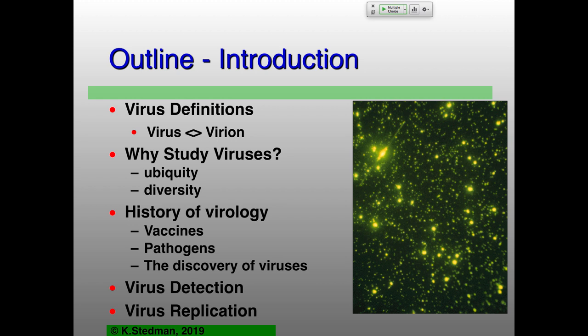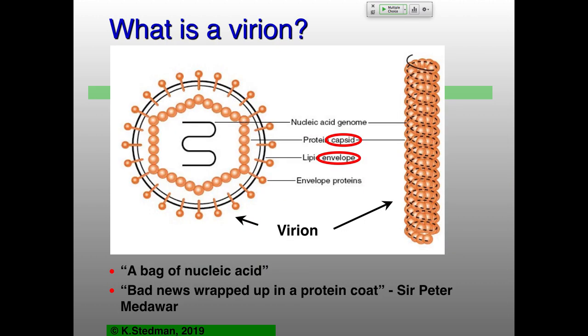Bacteriophages — these are viruses which infect bacteria. The classic example is bacteriophage T4, our friendly giant microbe here. But these are by far and away the most common viruses present on our planet, and there are ridiculous numbers of these kinds of viruses. We may get a chance to talk about virus detection and replication, but given that we only have about a half hour left, we may or may not get there. So what's a virion? Again, this is the extracellular part of the virus life cycle.